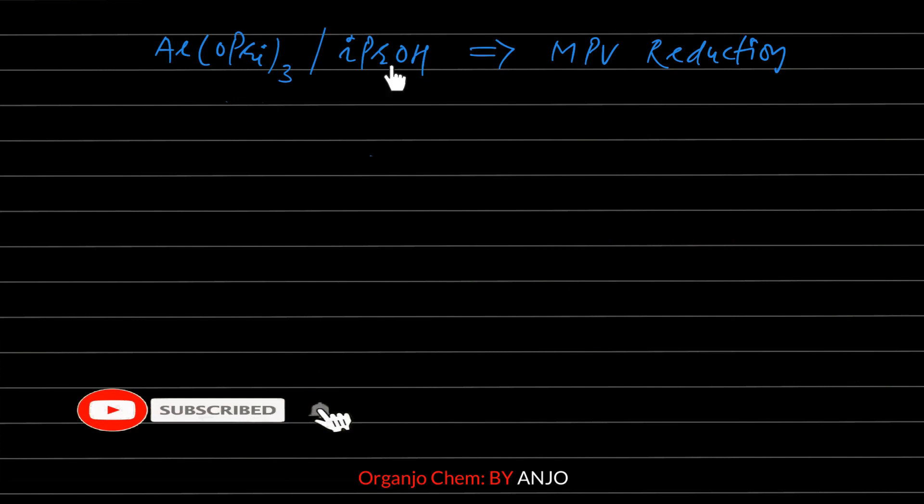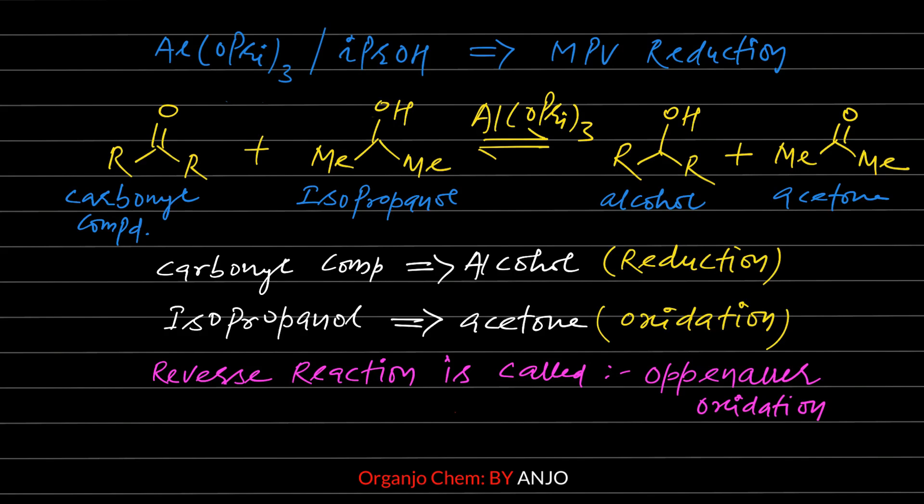In this reaction, aluminum isopropoxide is used along with isopropanol, and this is called the MPV reaction. The speciality of this reaction is that other groups present in the molecule — such as C=C, C≡C, nitro, and ester — do not undergo any reaction.